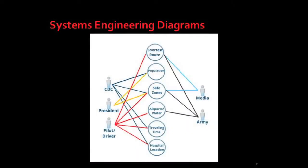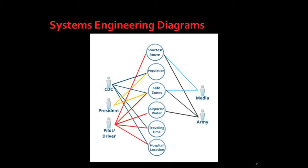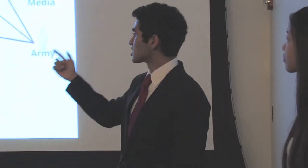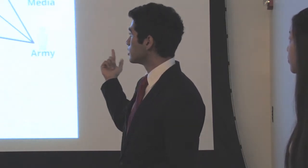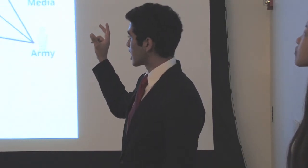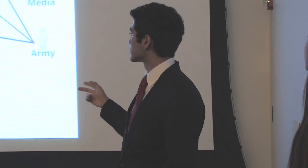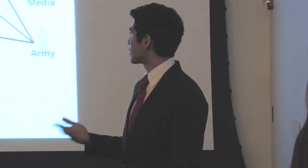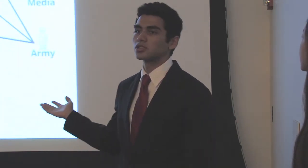This is called a use case diagram, and it's part of the systems engineering process. We built this diagram within the first few project meeting weeks because it's like a drawing board — it helps us plan out what the app will cover and what it will give to its users. We have five different types of users, such as the president of the United States or the media, and in the middle are the things they would be interested in, such as the airports, traveling time, population, or the shortest route.